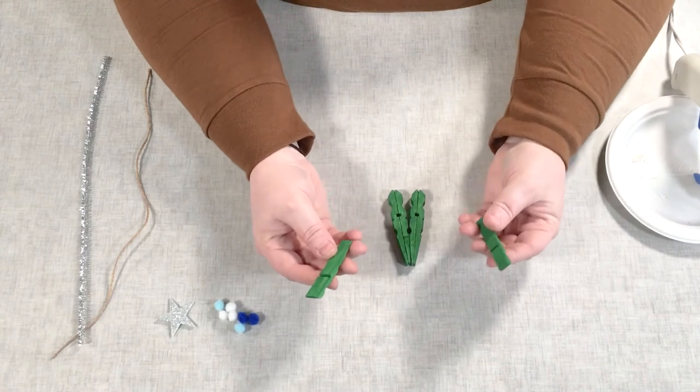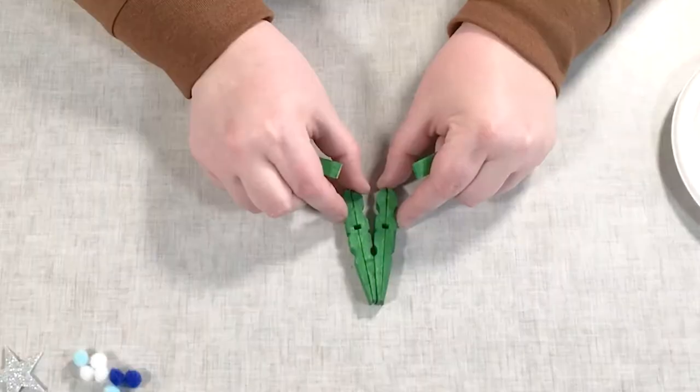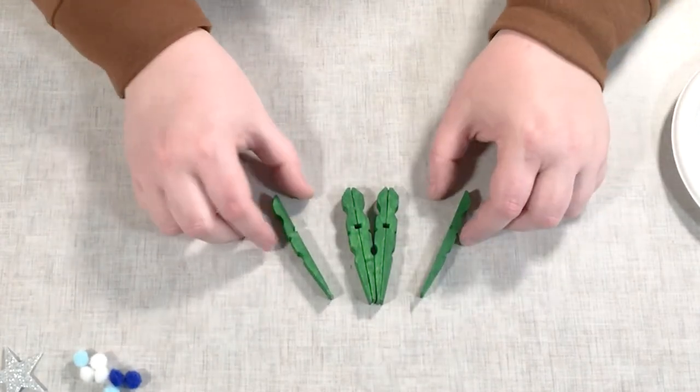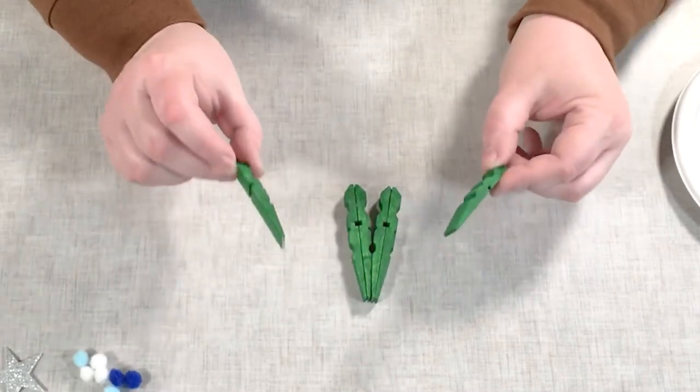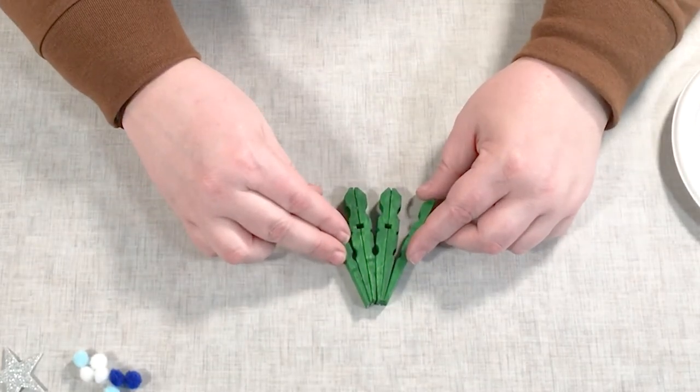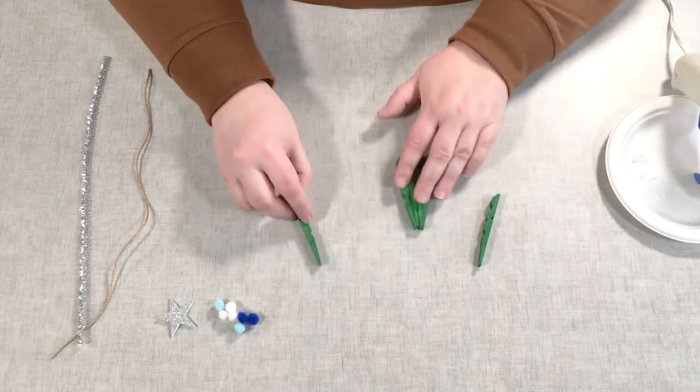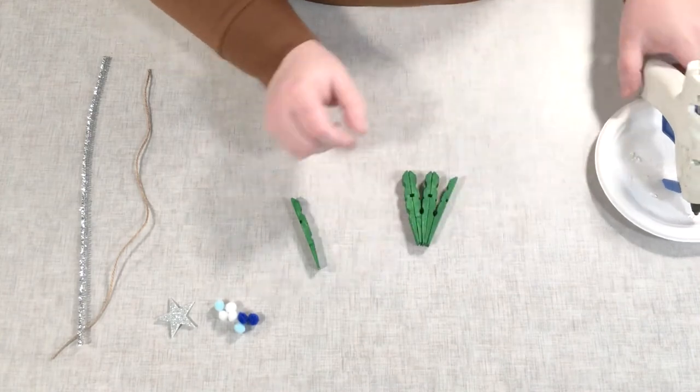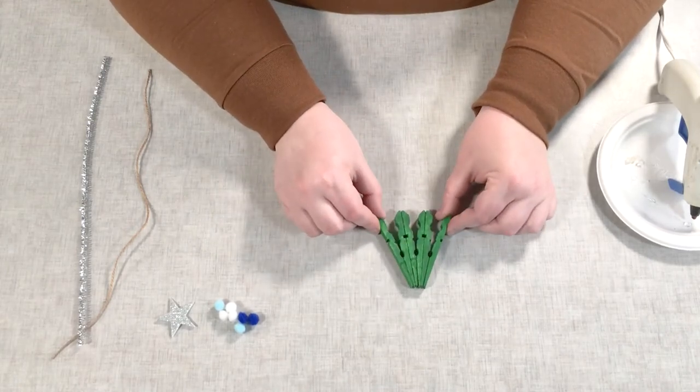The two remaining pieces of clothespin are going to go on the outside of the V that we've created. And again we're going to have the smaller pointed end up. And you're going to want to have the curve, the little curved out piece on the inside. You do that, it'll fit together just like that. So you can see it forms a tree. So we're going to glue that together, one on each side. And there you have your clothespin tree.